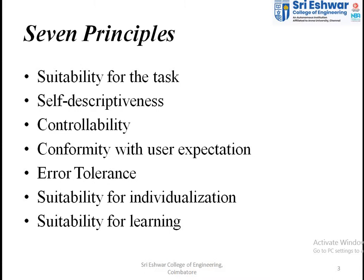The third principle is controllability — the user interface should be designed so users can control their operations. For example, if a user wants to exit an operation, that functionality should be available. The fourth principle is conformity with user expectation — while designing a user interface, you need to ensure that all requirements and functionality that the user needs are satisfied and included.